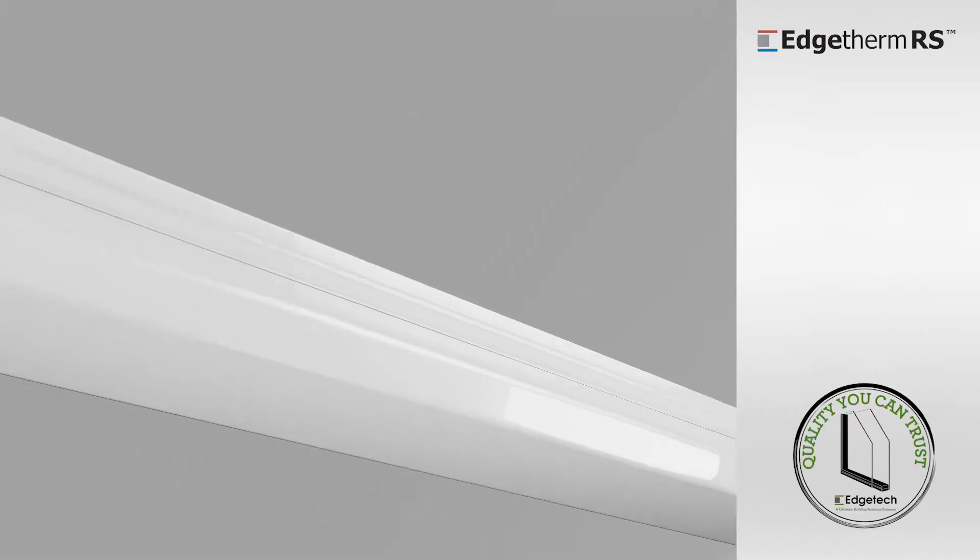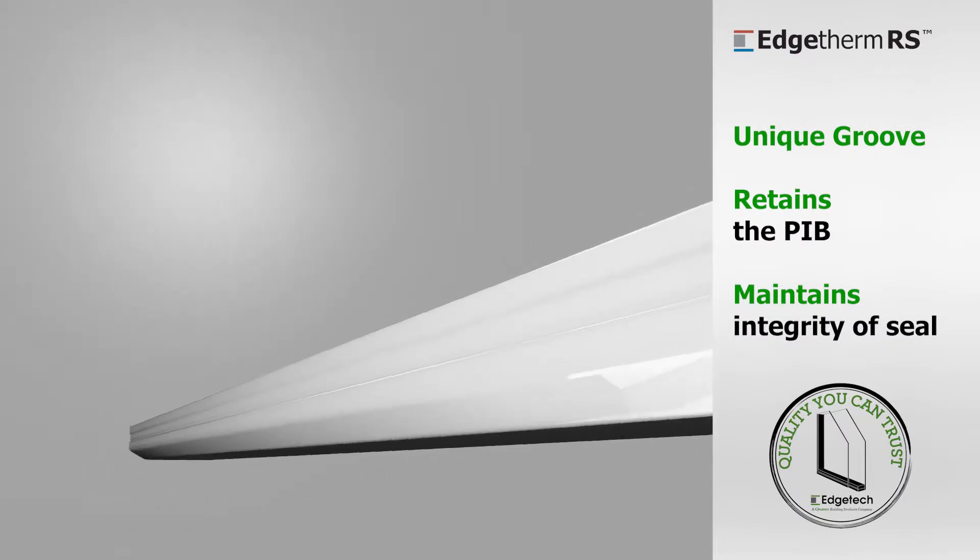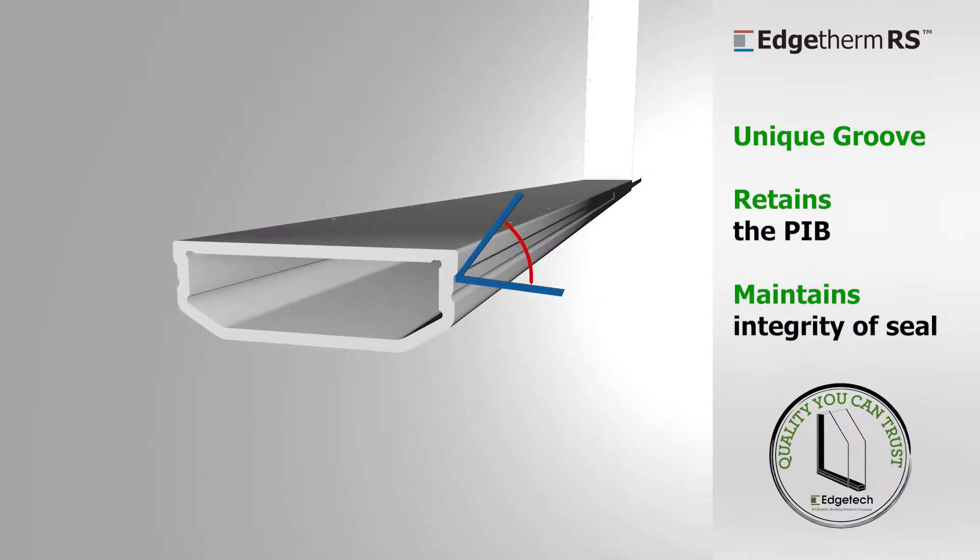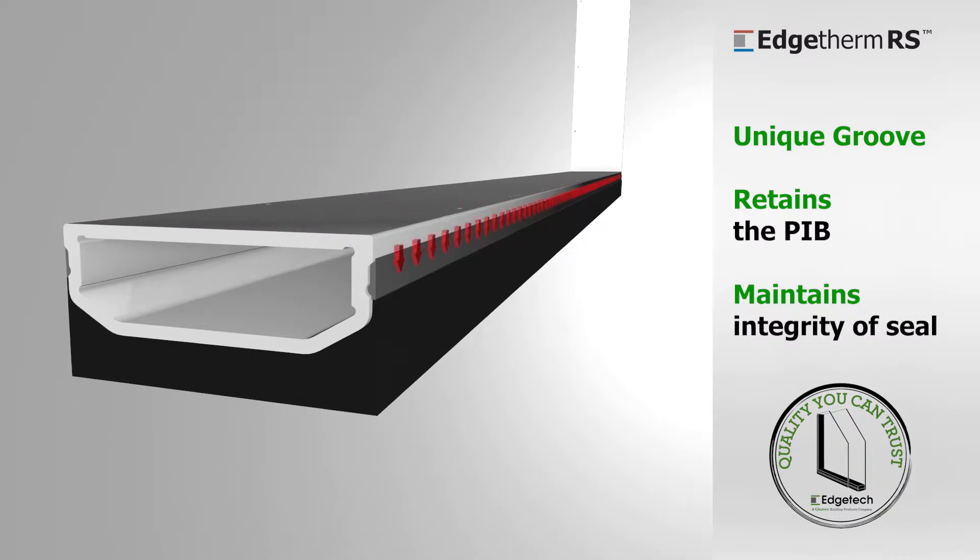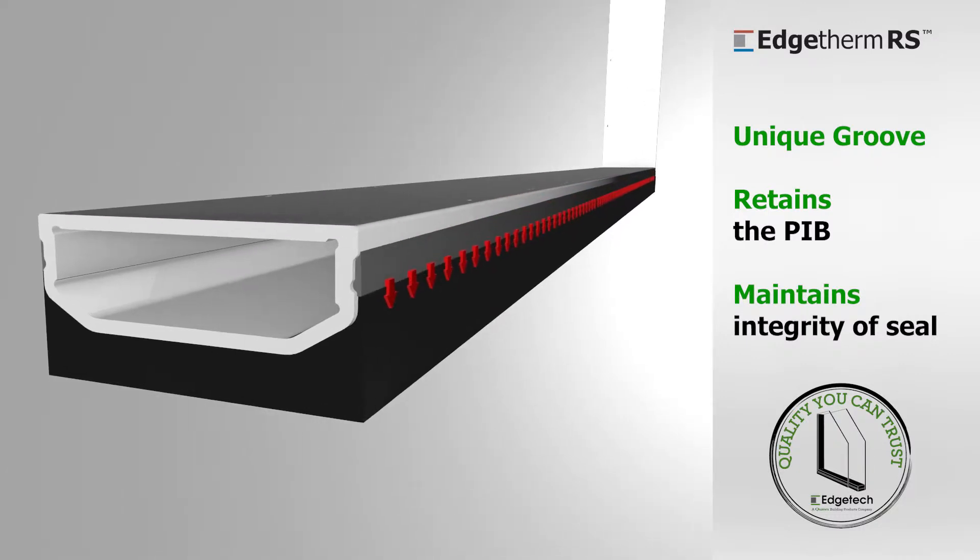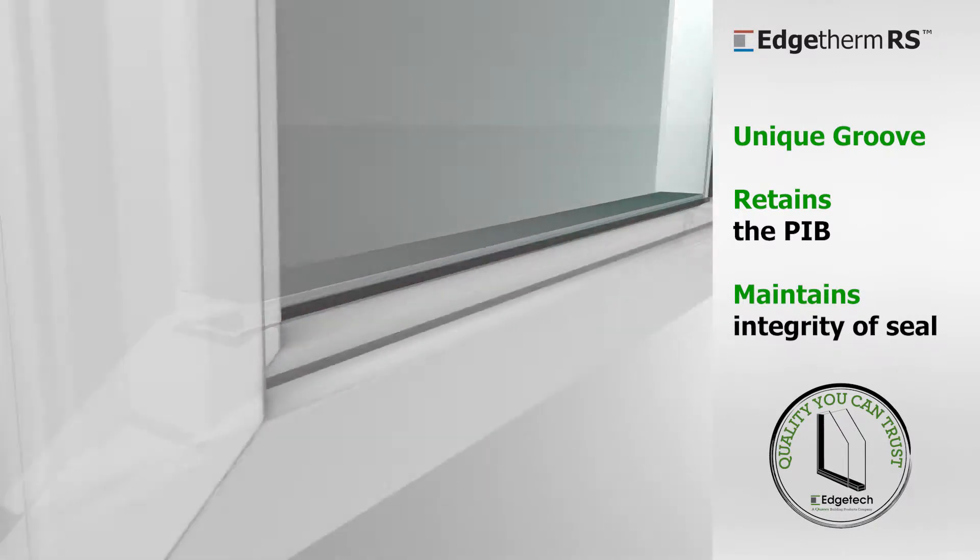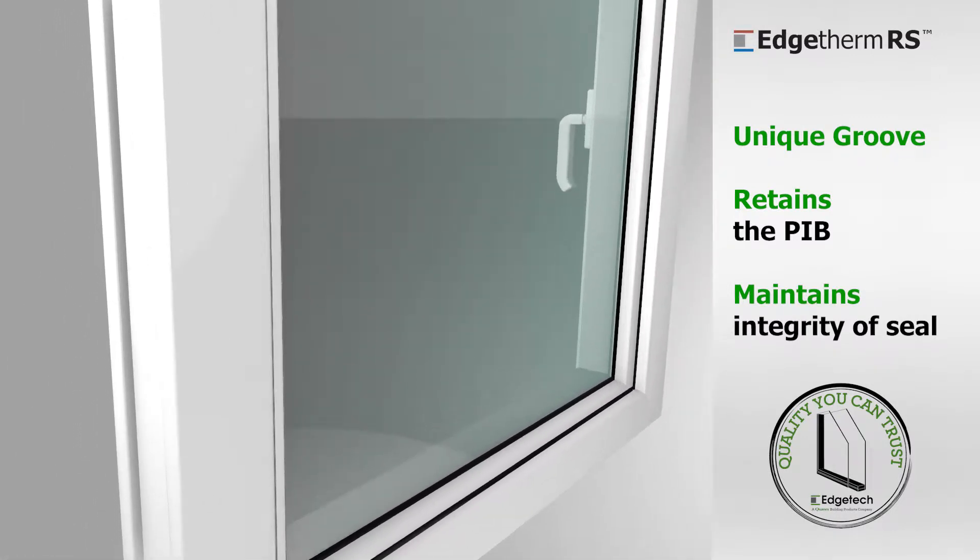EdgeTherm RS has been designed to retain the PIB within its unique groove along the side of the bar. It is also slightly biased at the glass interface to channel any PIB movement towards the secondary seal, rather than into the unit during wetting out of the IGU in manufacture. This maintains the integrity of the edge seal for reliable and durable unit performance.